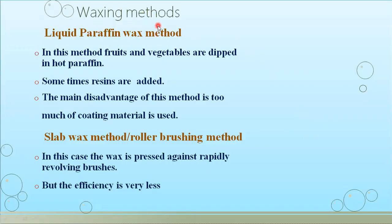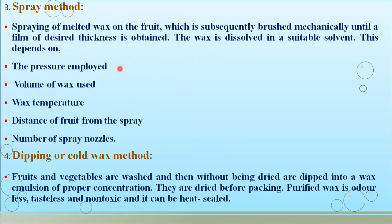Now we will see the different methods of waxing. The first is the liquid paraffin wax method, in which certain fruits and vegetables are dipped into hot paraffin, and sometimes resins are added to the wax. The main disadvantage is that there may be too much coating material applied. The next is the slab wax or roller brushing method, in which wax is pressed against rapidly revolving brushes, but its efficiency is very low. The third method is the spray method, in which melted wax is sprayed on the commodity and subsequently brushed mechanically.